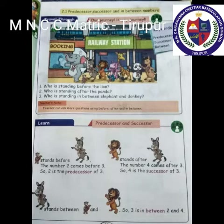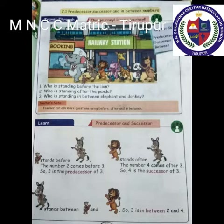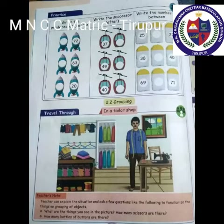Predecessor means the number before, and successor means the number after. In the first picture, two stands before three, so two is the predecessor of three. In the second picture, four stands after three, so four is the successor of three. Three stands between two and four, so three is in between two and four.